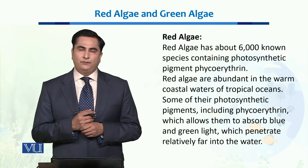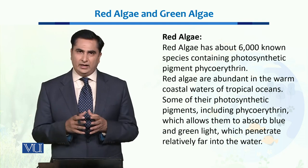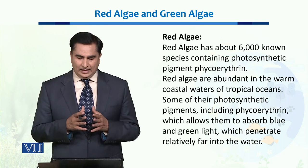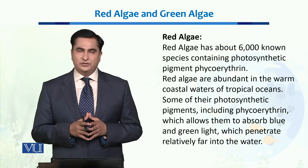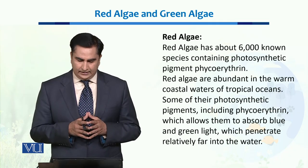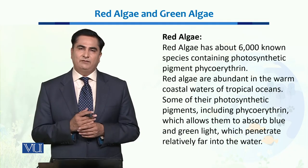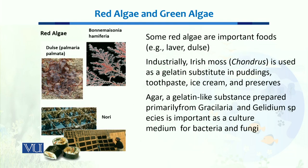Some of their photosynthetic pigments, including phycoerythrin, allow them to absorb blue and green light, which penetrates relatively far inside the water. Some red algae are an important source of food, such as laver and dulse, and they are an important food source in countries near coastal areas.